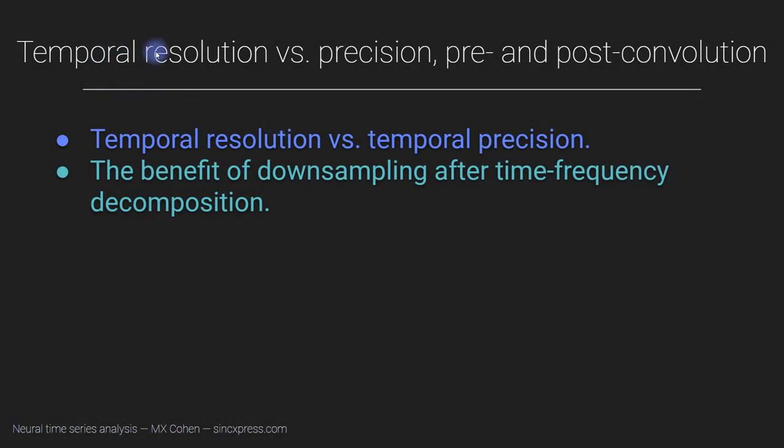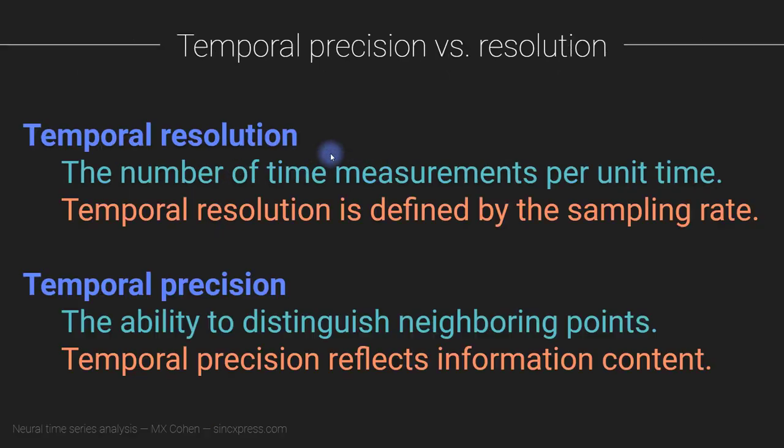Let's talk about temporal resolution versus temporal precision before and after wavelet convolution. I will start by defining what these terms mean and how they differ from each other, and then I'm going to argue that it's a good idea to temporally downsample your data after you've already done the time frequency decomposition.